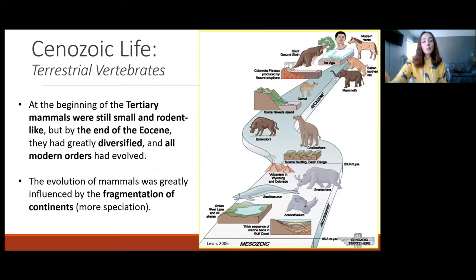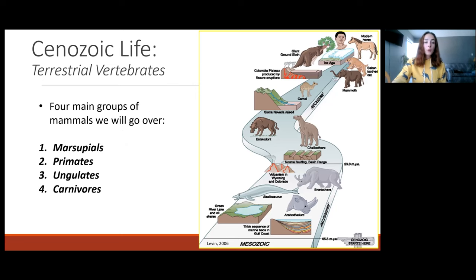Moving on to terrestrial vertebrates — like we said earlier, mammals were dominant, and that's why the Cenozoic is sometimes referred to as the age of mammals. However, mammals were still small and rodent-like by the end of the Mesozoic and beginning of the Cenozoic. By the end of the Eocene, they had greatly diversified, largely because of the fragmentation of continents, causing more geographical isolation and therefore more speciation. The four main mammal groups we will go over include marsupials, primates, ungulates, and carnivores.